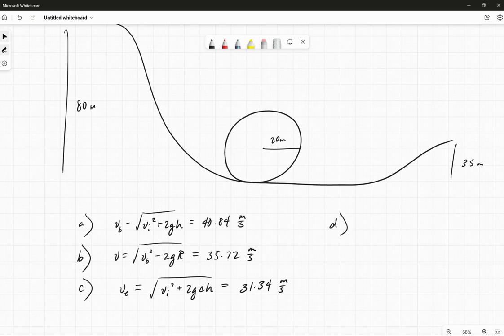And then finally, for part D, all the assumptions we made is that there is no friction, so that the potential energy lost in any given region is equal to the kinetic energy gained.